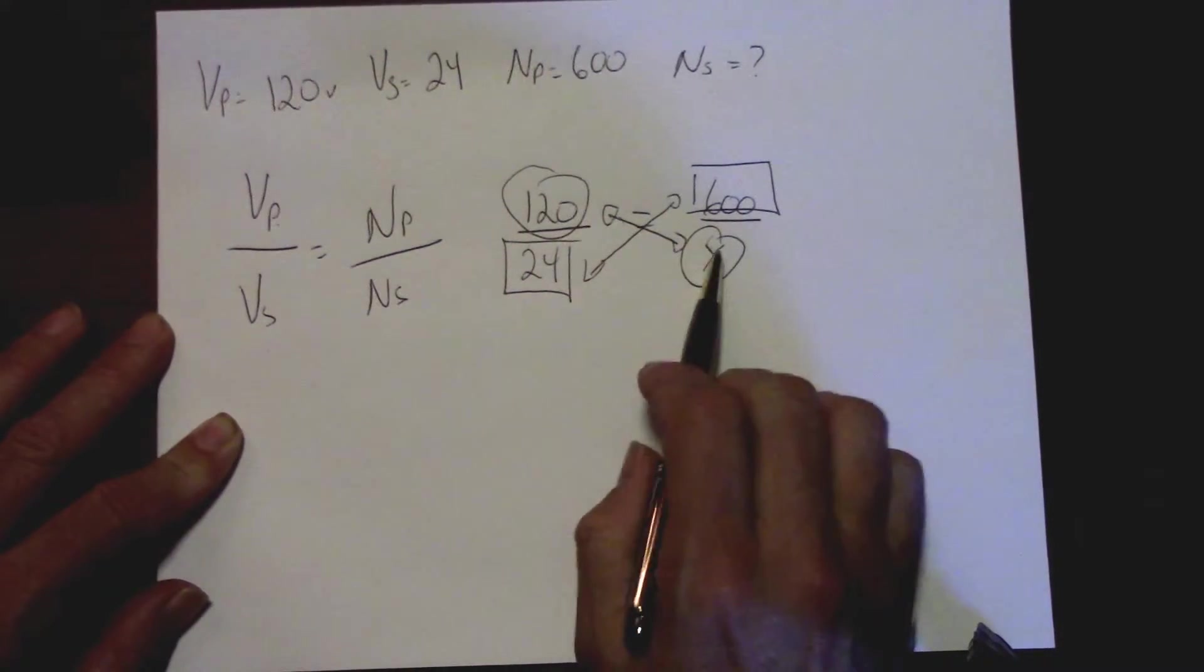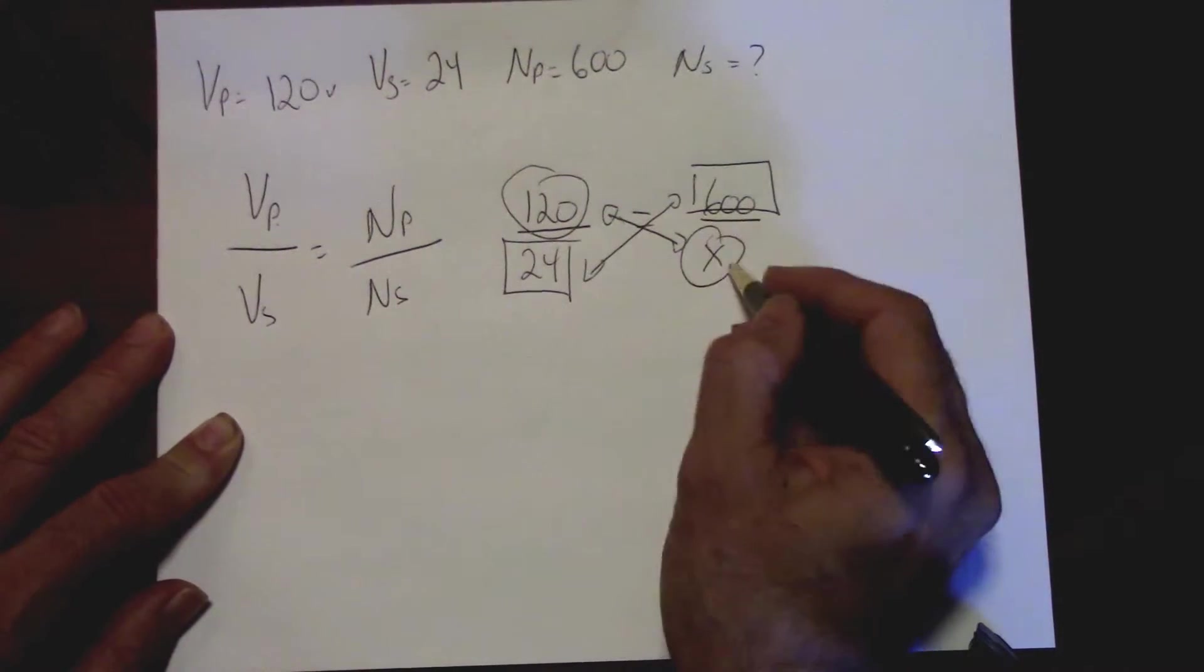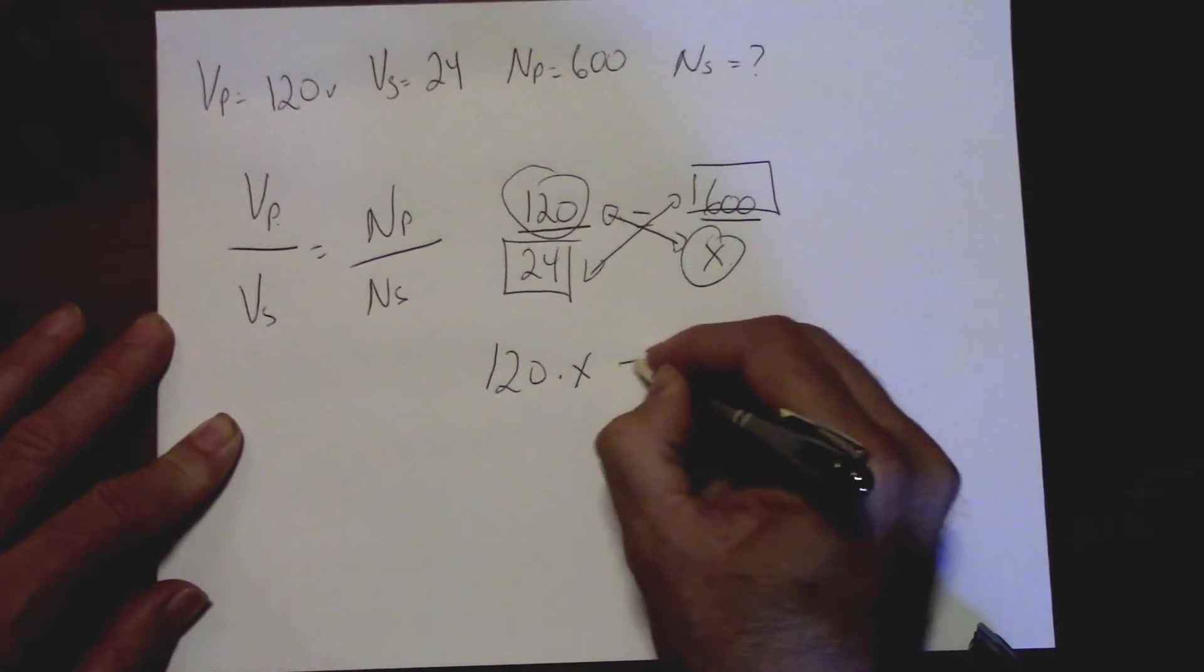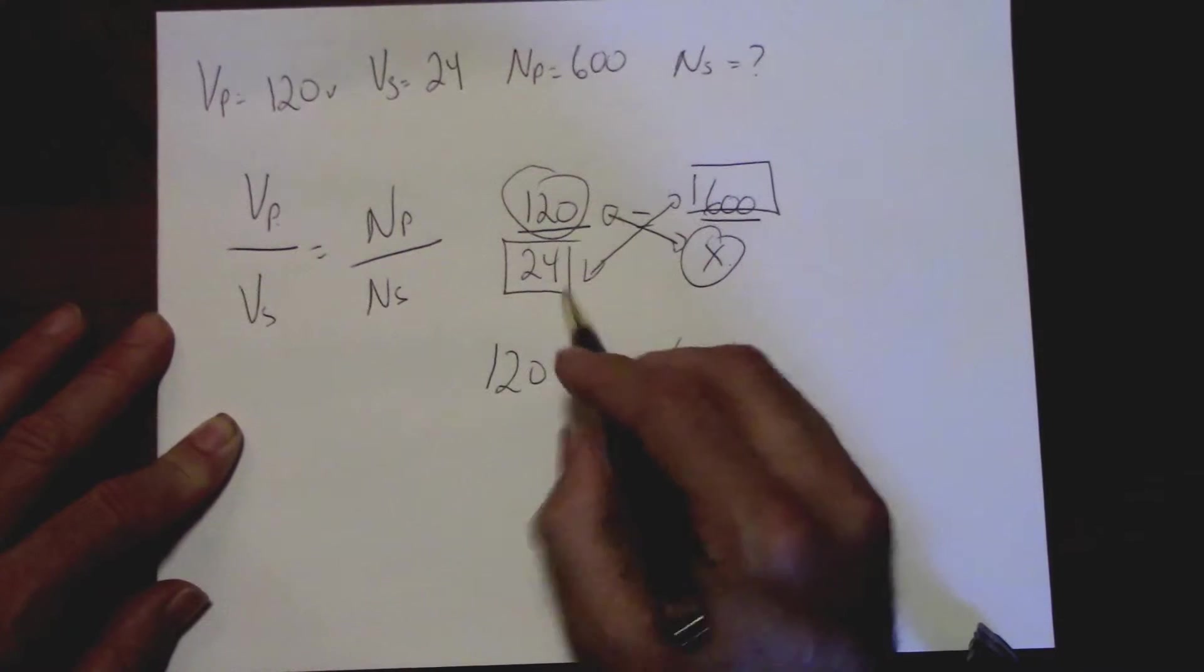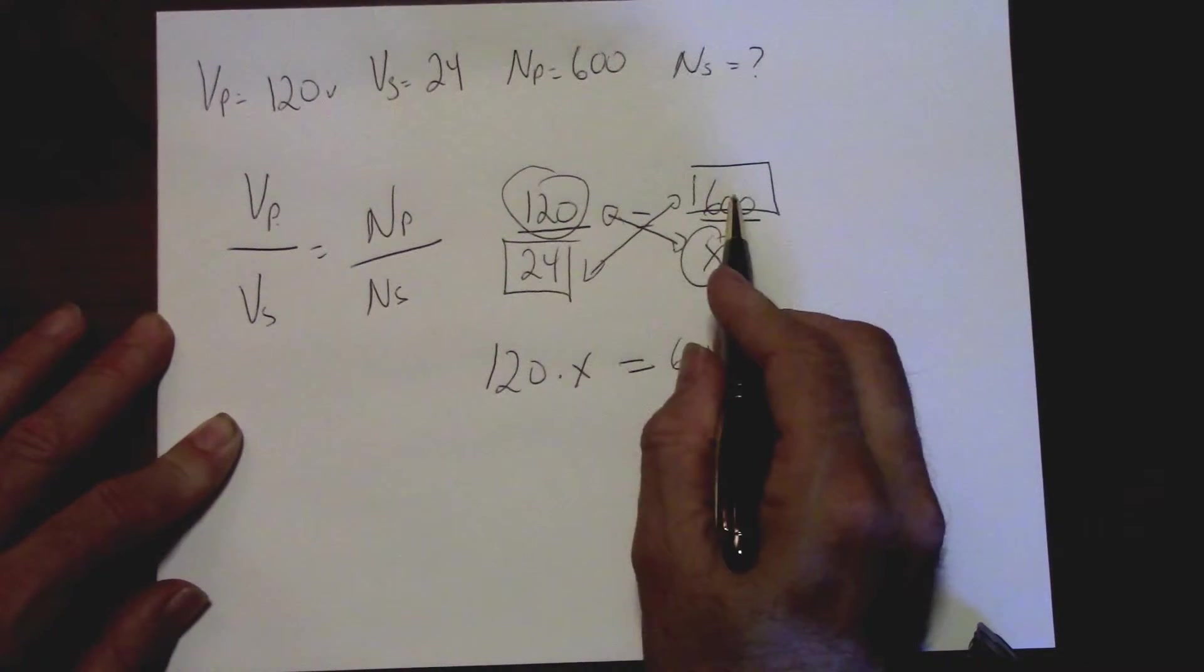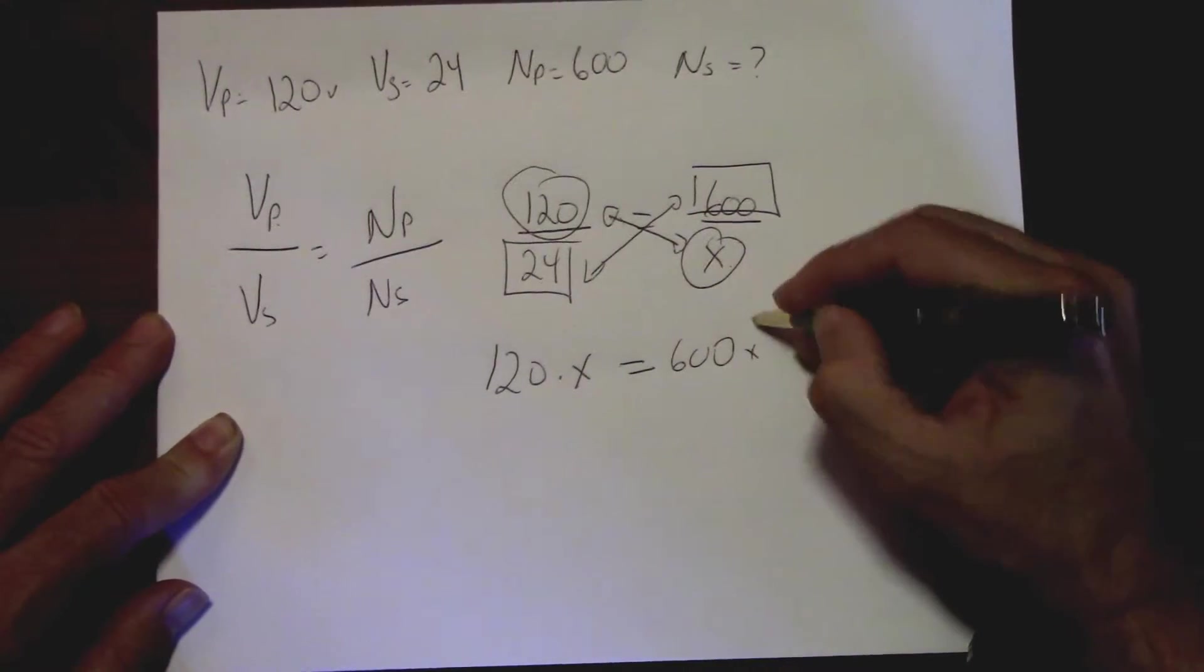I also now state that I like my X's on the left side of the equal sign. So I will go 120 times X equals, well here's 600 and because 24 is dividing and I come across the equal sign, I change the state. So division becomes multiplication now.